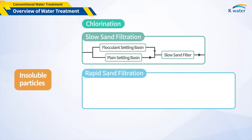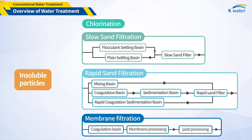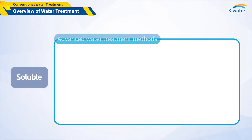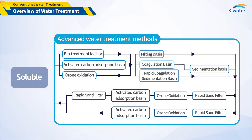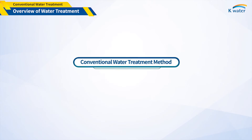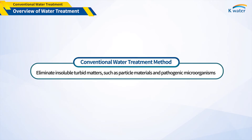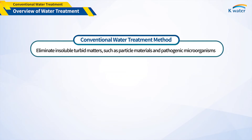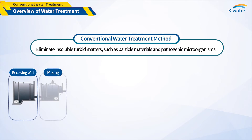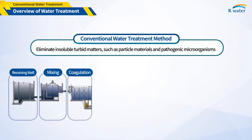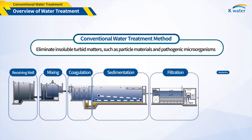Slow filtration, rapid filtration, and membrane filtration are mostly used for removing insoluble impurities. When soluble components such as ionic materials cannot be removed sufficiently, we can use advanced water treatment methods like ozonization and absorption of activated carbon. The conventional water treatment focuses on the elimination of insoluble turbid matters, such as particles and pathogenic microorganisms. Unit processes include rapid mixing, coagulation and flocculation, sedimentation, filtration, and disinfection.